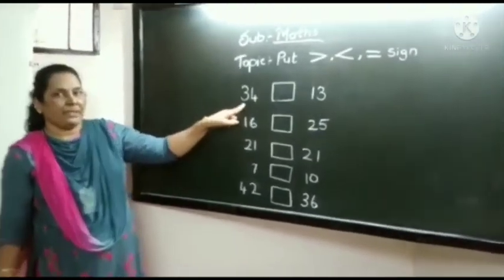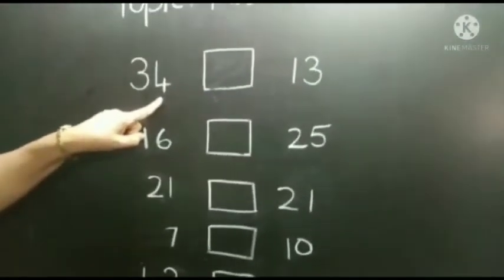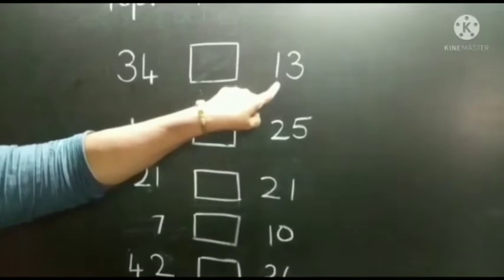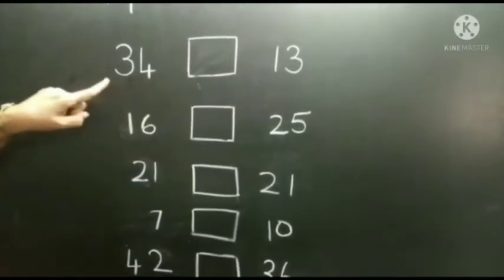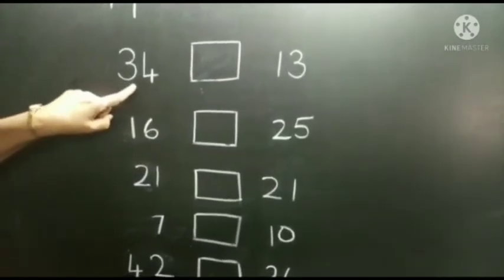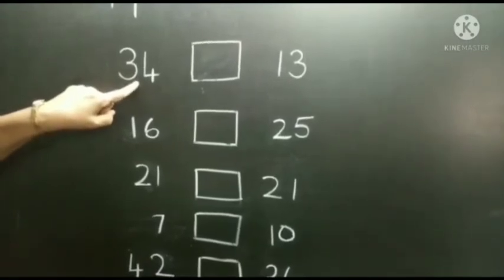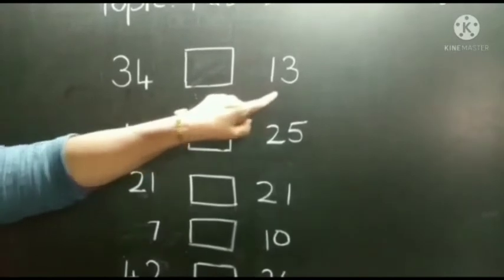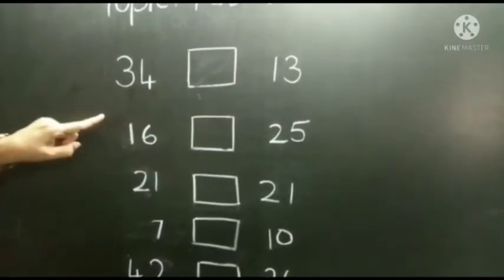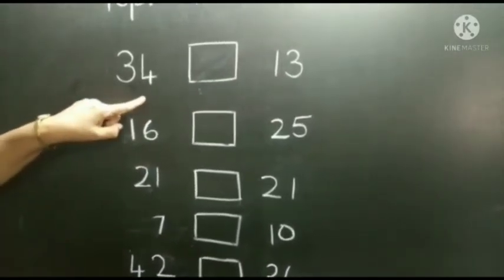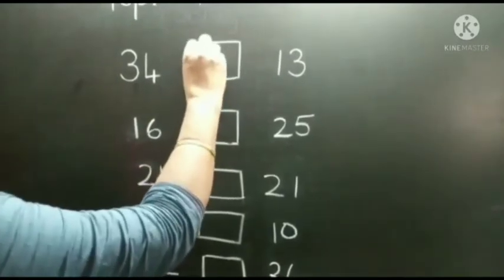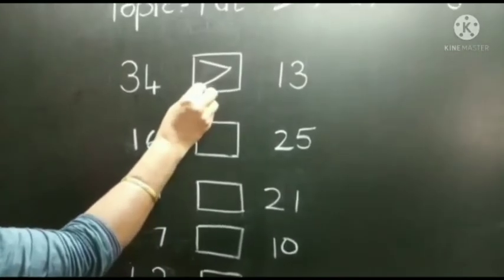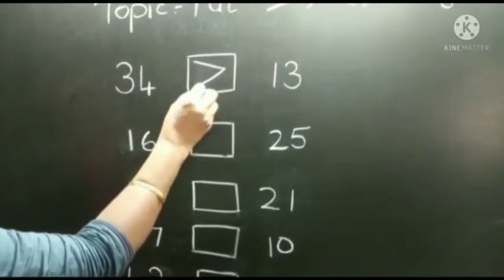Now the first number is 34. And here 30. Now 34 is greater than 30. So the crocodile will open his mouth towards the greater number. We will put this sign here.